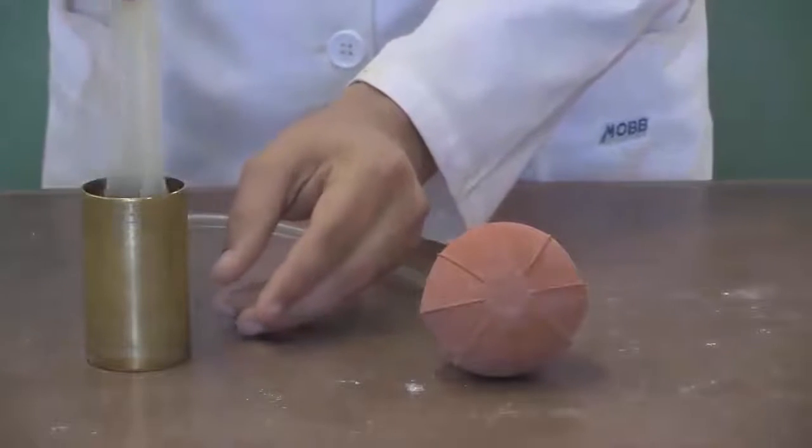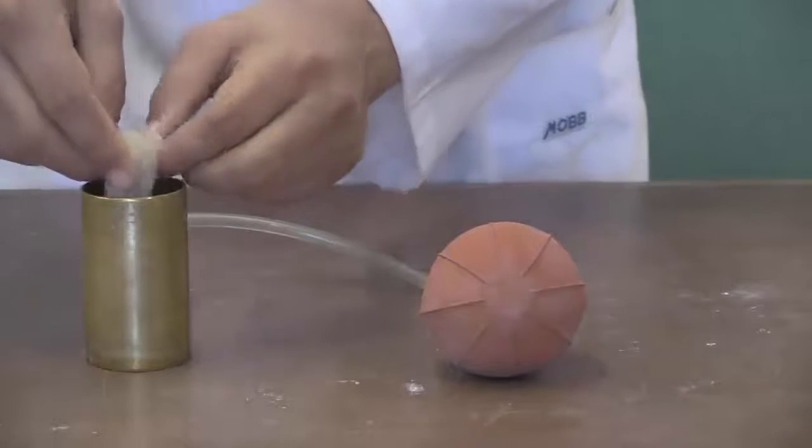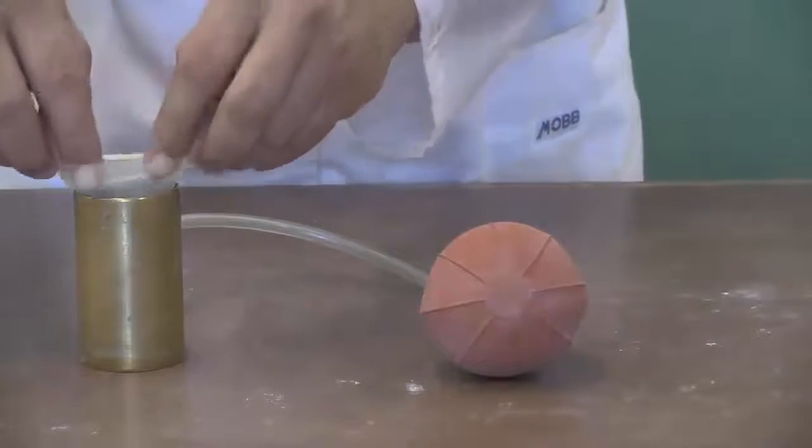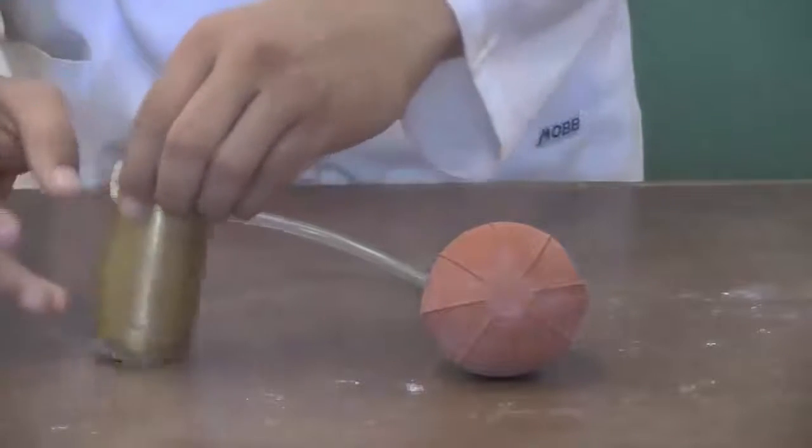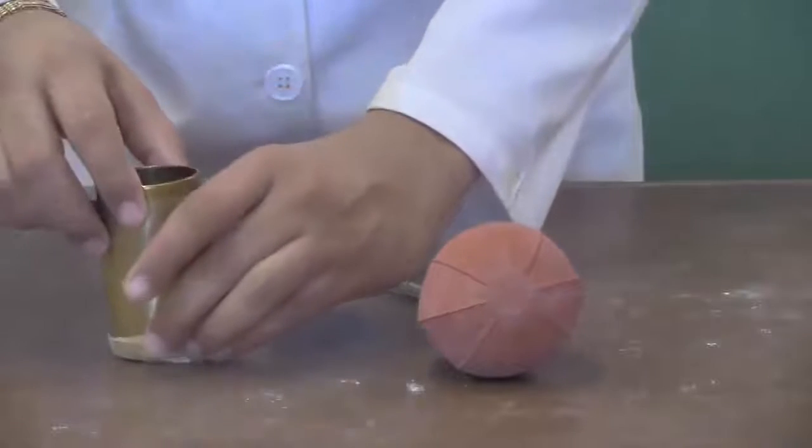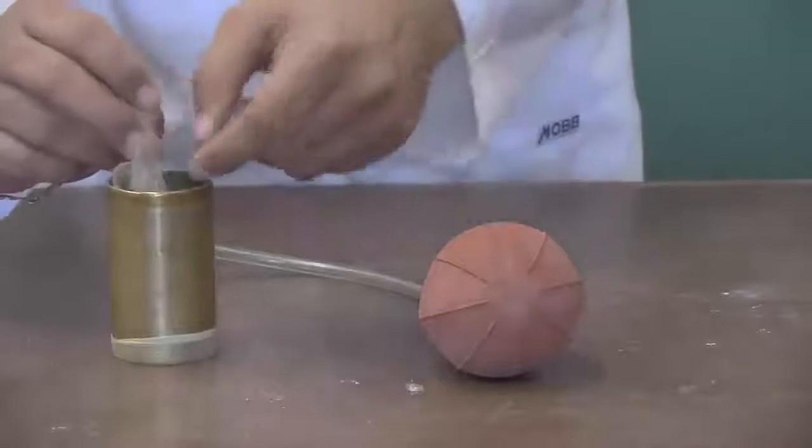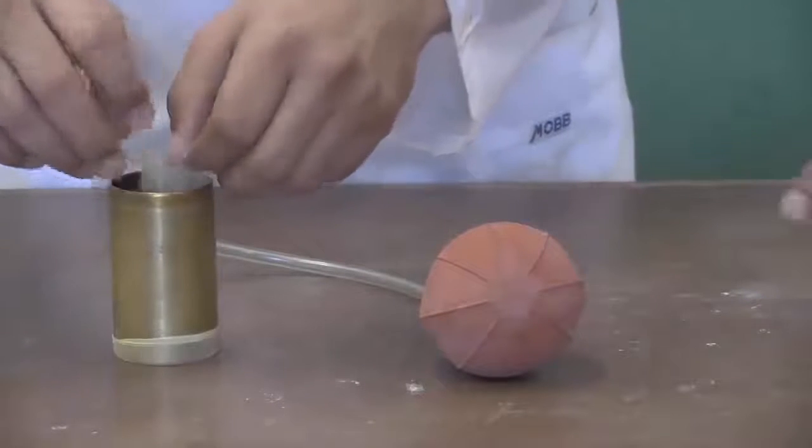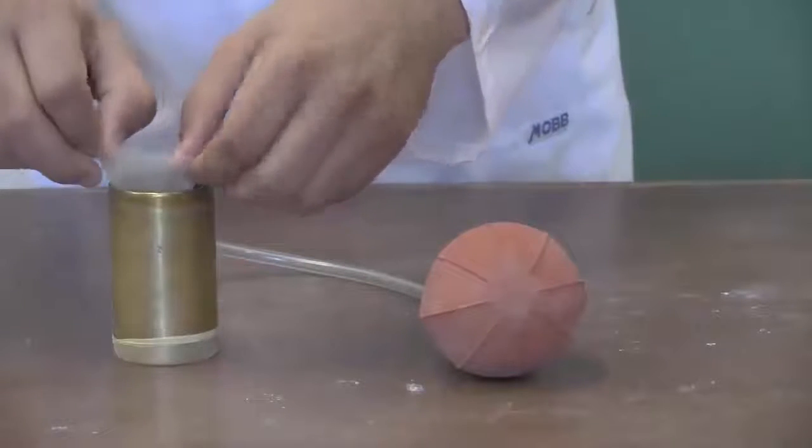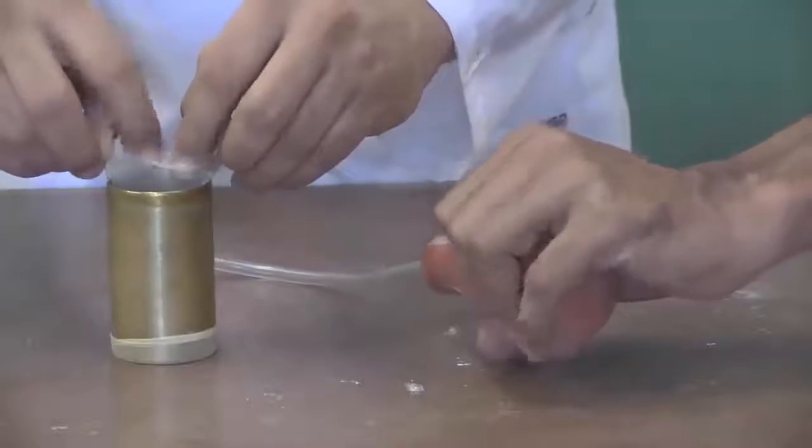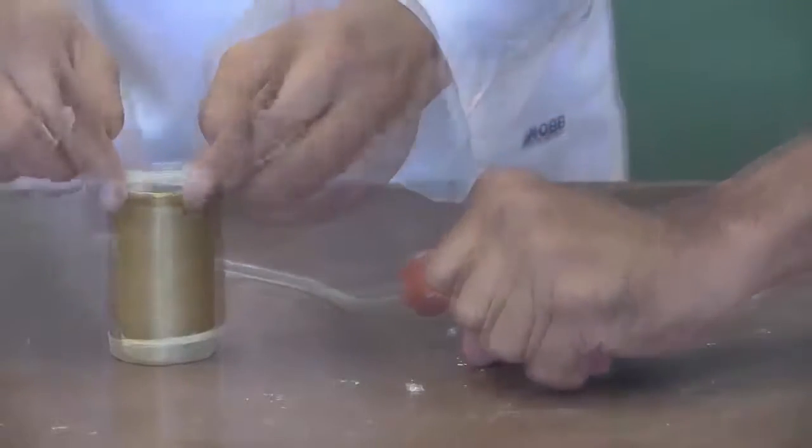Place the membrane inside the membrane expander. Fold one end of the membrane over an edge of the expander. Squeeze the rubber bulb and then fold the other end of the membrane over the next edge of the expander.